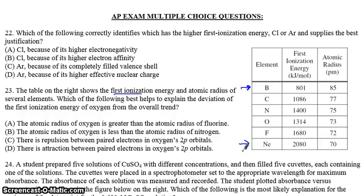Which of the following best helps to explain the deviation of the first ionization energy of oxygen from the overall trend. What we're saying is, here's the P block of the periodic table. And we're looking at group 2. So as we're going from boron to carbon and on, the ionization energy should go up, should increase.